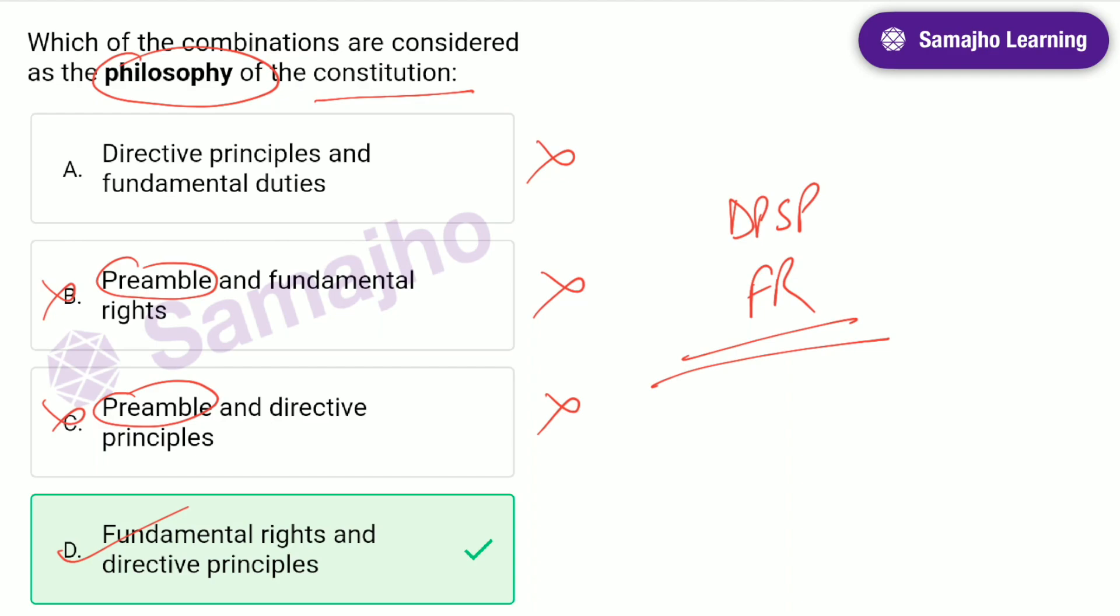The preamble is the point of view of the philosophy of the Constitution, although it can confuse you as well. And the fundamental duties will be excluded first of all, because the fundamental duties are not the philosophy of the Constitution. It can be tricky for many students, this question, but in these questions, generally.